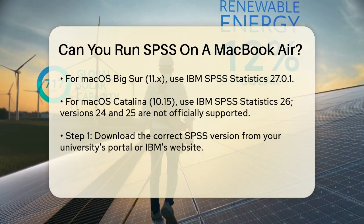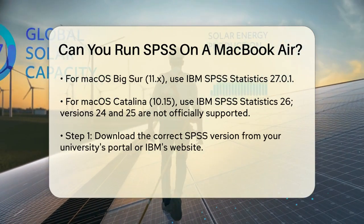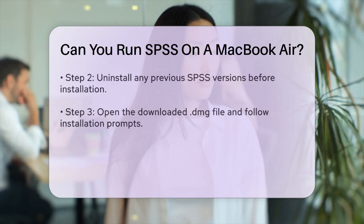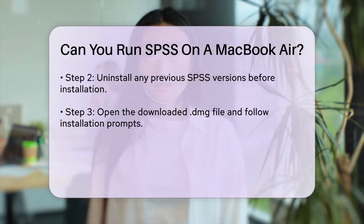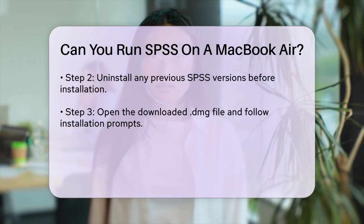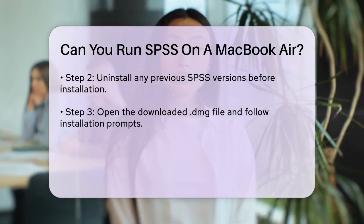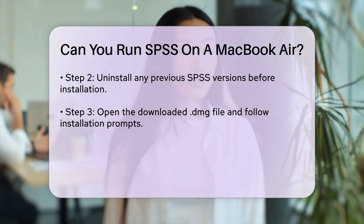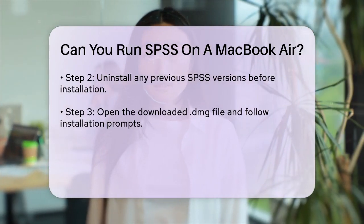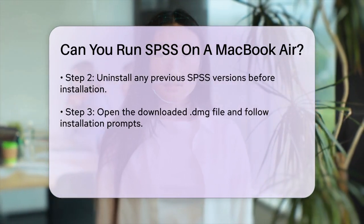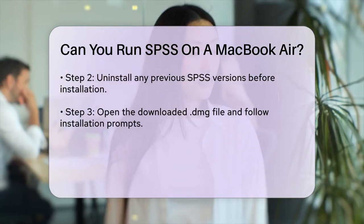Step 3: Install the software. Click the downloaded DMG file, open the installer, and follow the prompts. You'll need to agree to the terms and conditions and choose where to install the software. Step 4: Install Python. During the installation process, you'll be asked if you want to install Python. Select Yes and agree to the terms and conditions for Python as well.